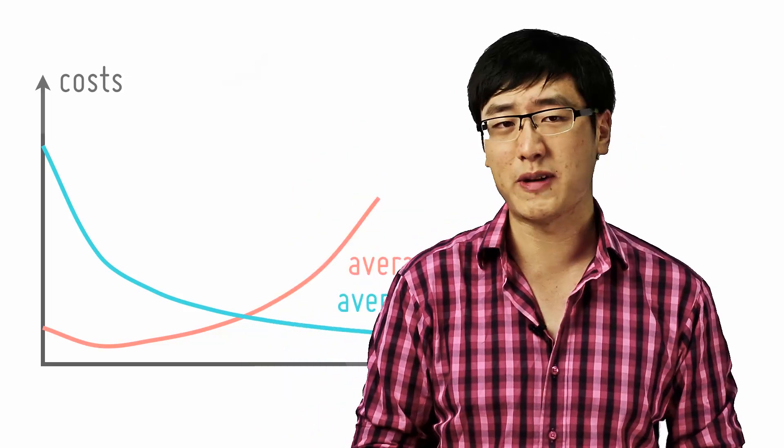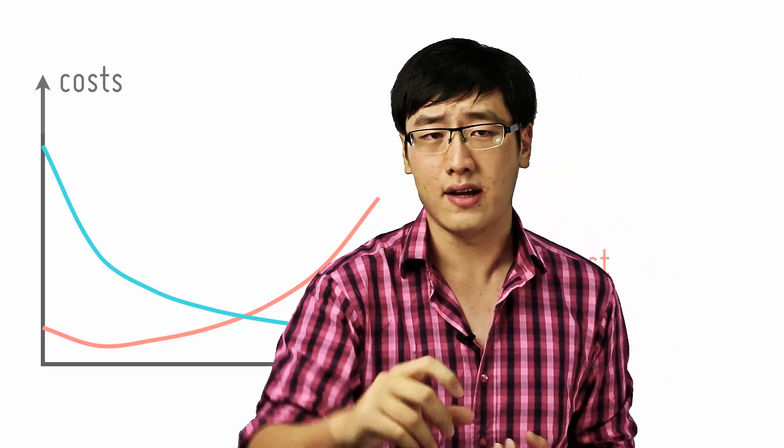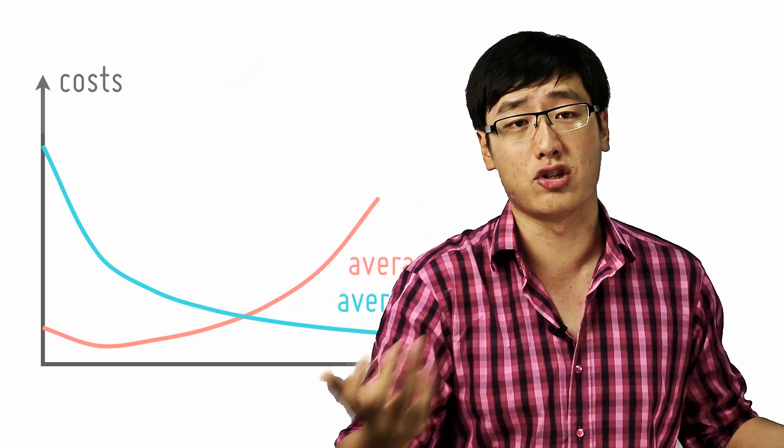So at first the cost is very high because there's no specialization and so on. And it decreases because of the specialization, operating better equipment and so on. And then later on, it increases again because of diminishing returns.